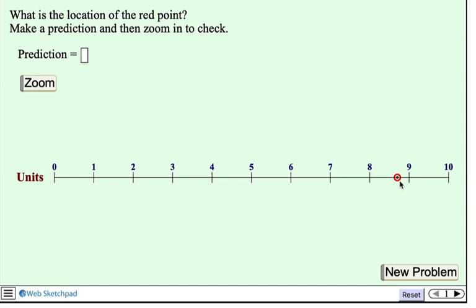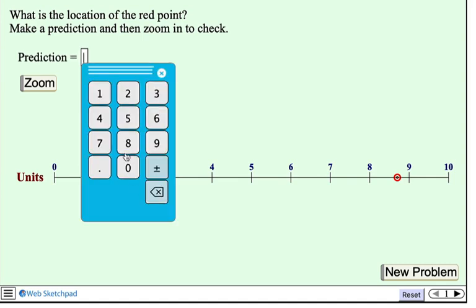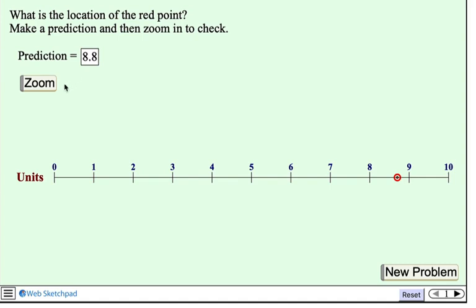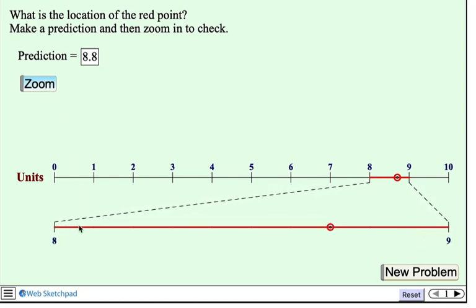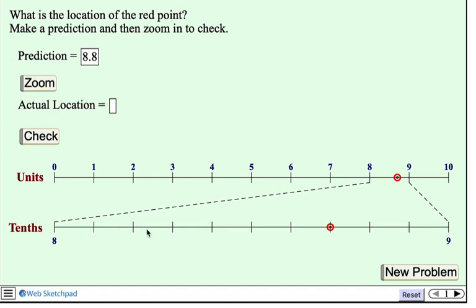I think it might be 8.8. And in this activity, I can actually enter that here, just so I can keep a record for myself of my prediction. And I'll press zoom to magnify this interval between 8 and 9. And here I see tick marks, and I have to think about what they represent. So I have 8 and 9. Ah, so this is 8.1, 8.2, 8.3, and our point is at 8.7.